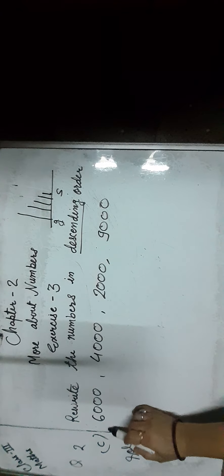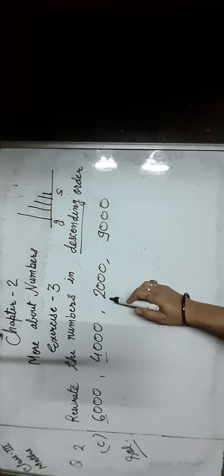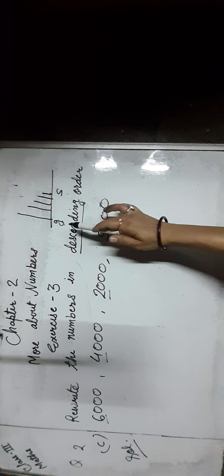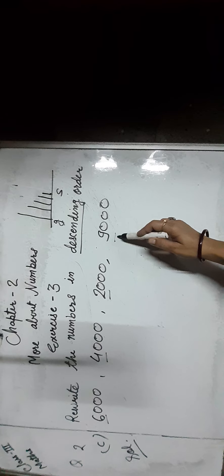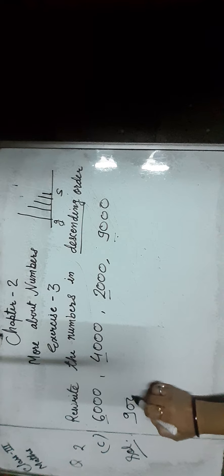Now next question. First we check the number of digits in all numbers — all numbers have 4 digits. Then we compare the 1000s place digit first: here as you can see 6, 4, 2, and 9. Descending means coming down from greatest to smallest. So 9 is the greatest, and we first write 9,000.